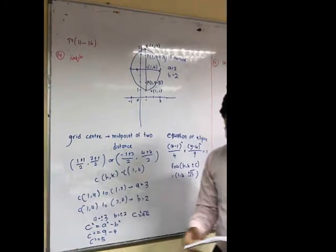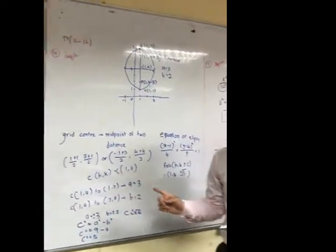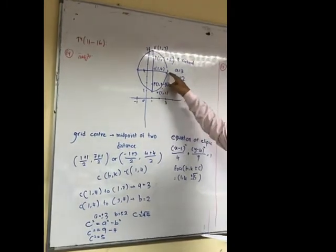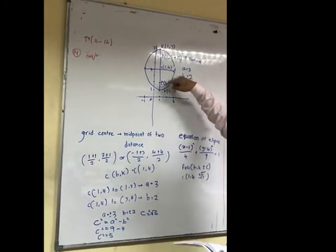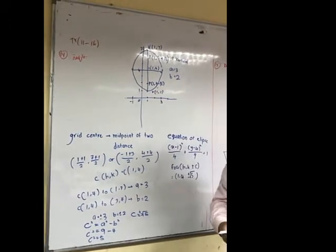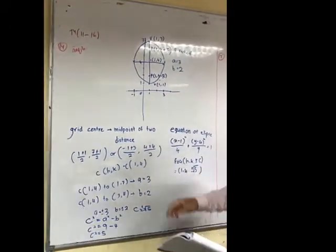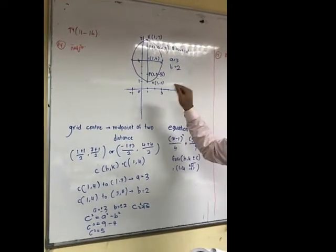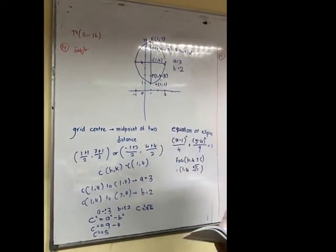The endpoints of the major and minor axis for an ellipse are (1, 1), (3, 4), (1, 7), and (-1, 4). So we sketch first, and plot the given points.